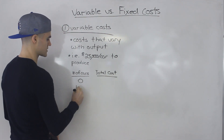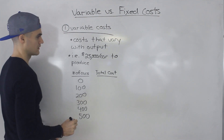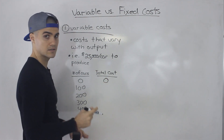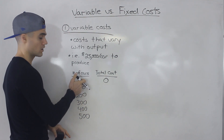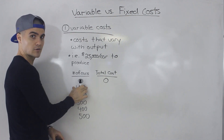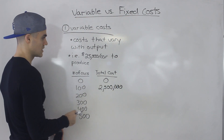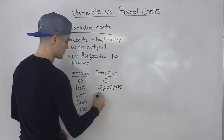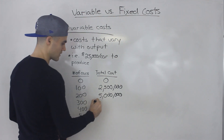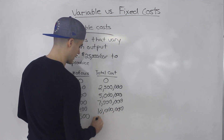Let's go up by 100: 100 cars, 200, 300, 400, and 500. If you produce zero cars at $25,000 per car, the total cost is zero. If you make 100 cars, 25,000 times 100 gives you $2.5 million. For 200 cars that's $5 million, 300 cars is $7.5 million, 400 cars is $10 million, and 500 cars is $12.5 million.